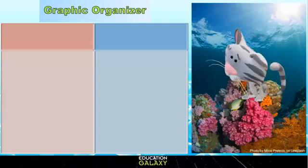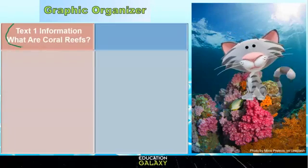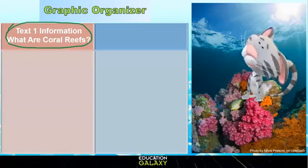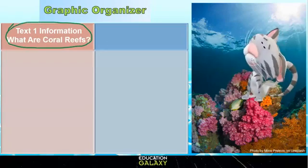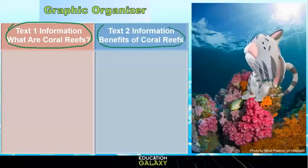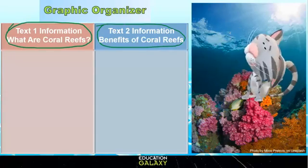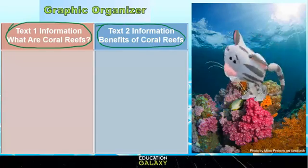In the column to your left, you will record information from Text 1, titled 'What Are Coral Reefs?' And in the column to your right, you will record information from Text 2, 'Benefits of Coral Reefs.'